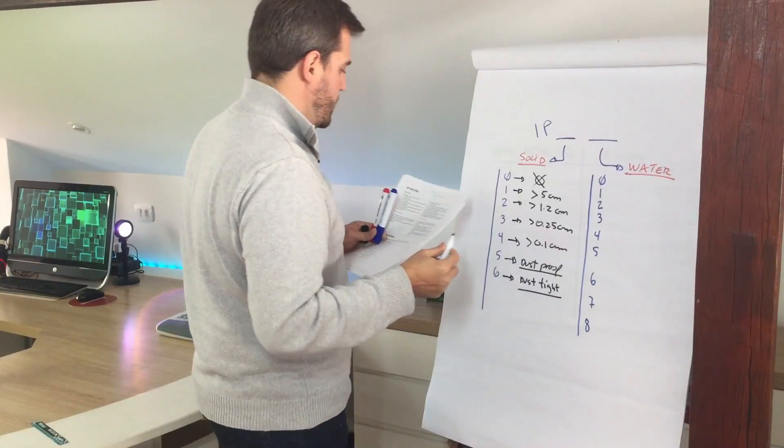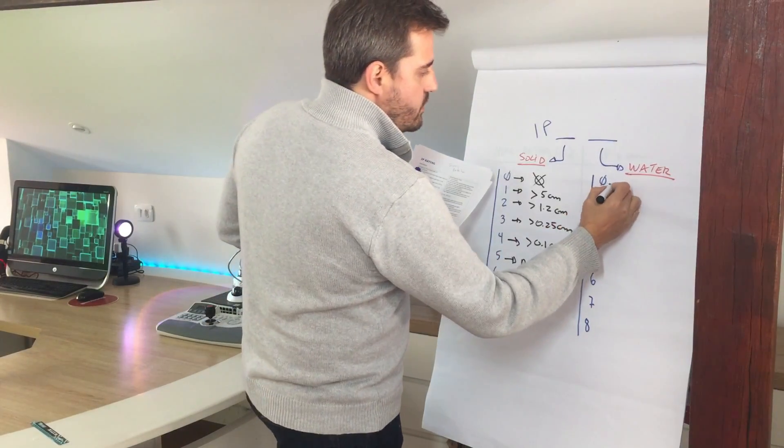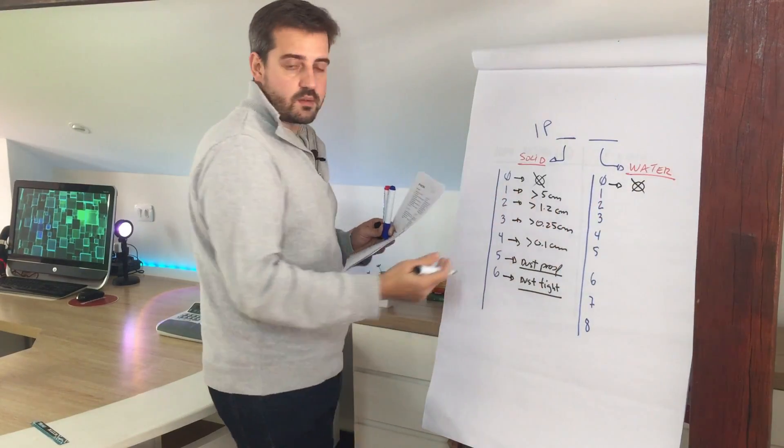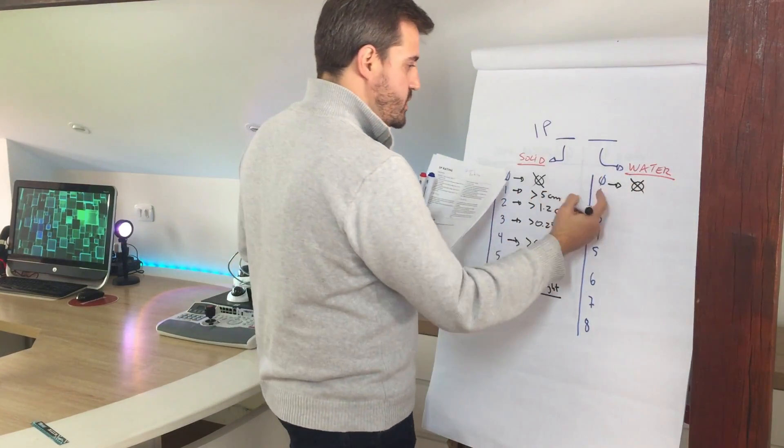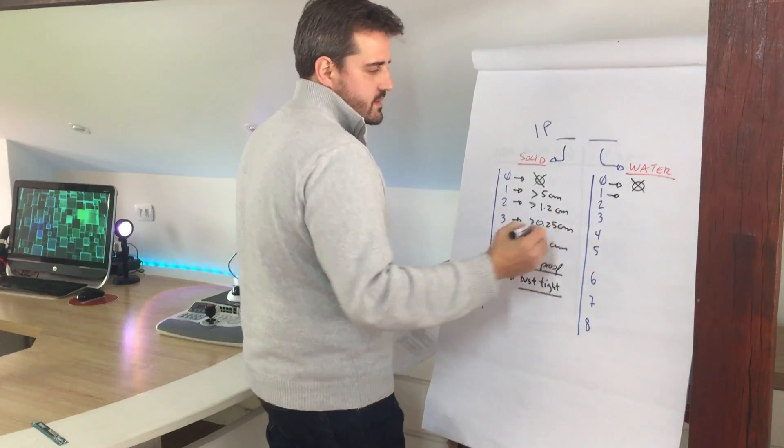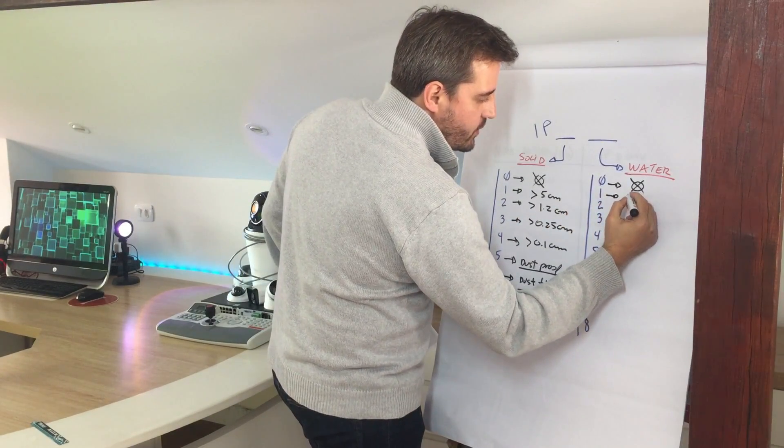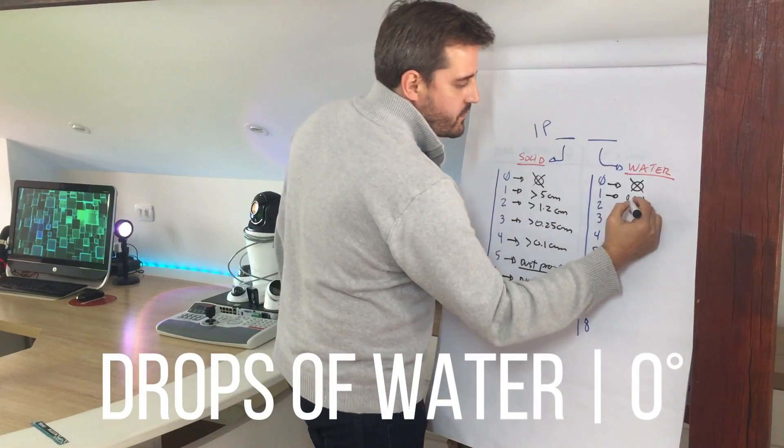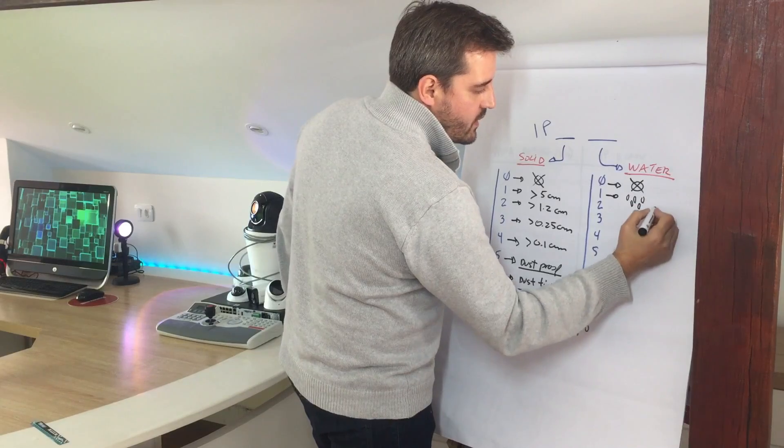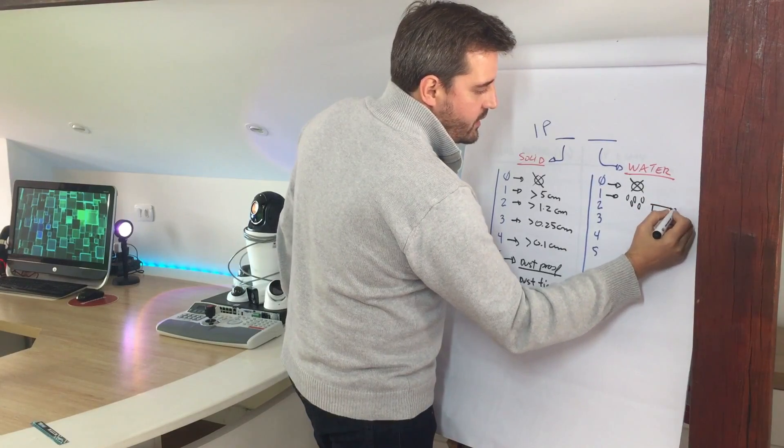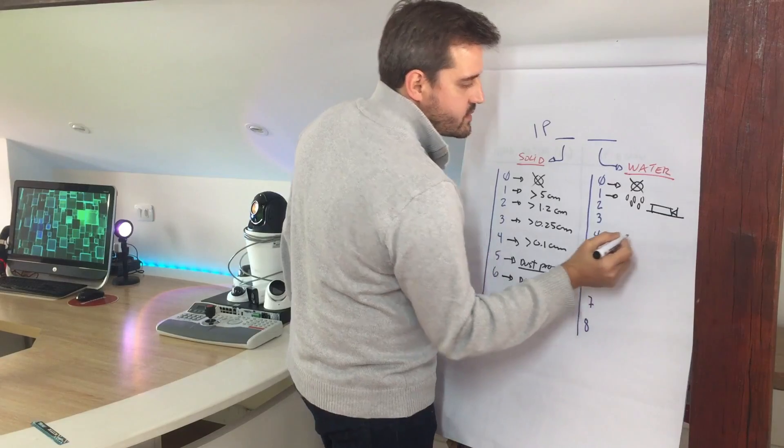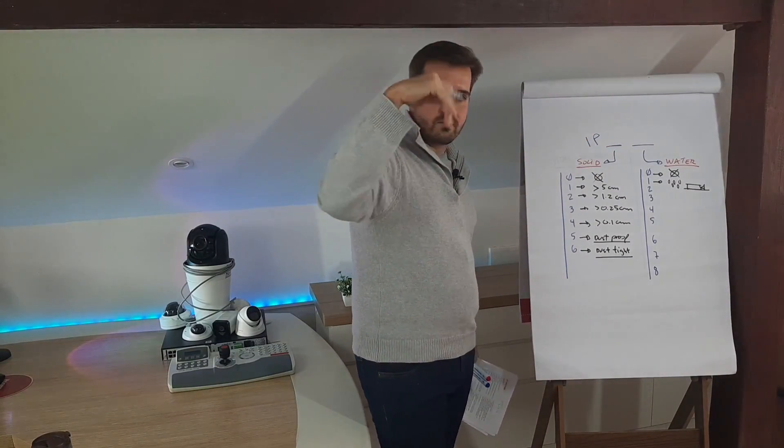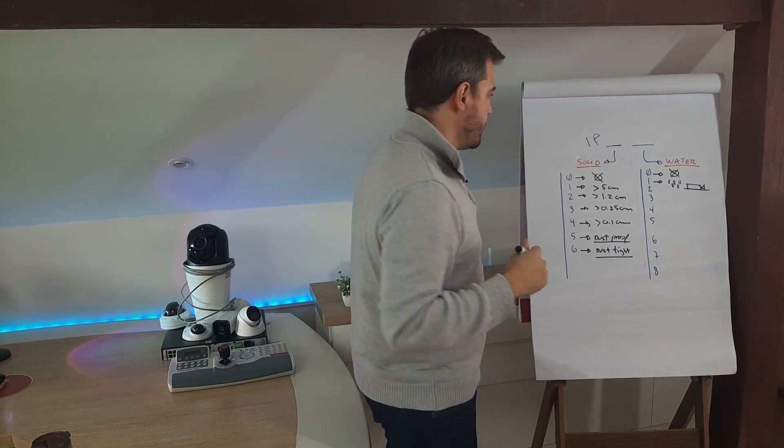Moving to water. So zero means that no protection, so like solid. First one is a protection that will cover a few drops of water when the camera is totally aligned horizontally, so the camera is static horizontally and it allows a few drops of water on top of the camera.